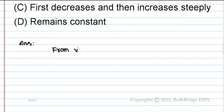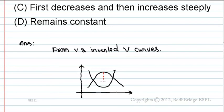From V and inverted V curves, Ia and power factor PF. This is IF excitation current. This is normal excitation, over excitation, under excitation. This is Ia curve. This is PF curve.